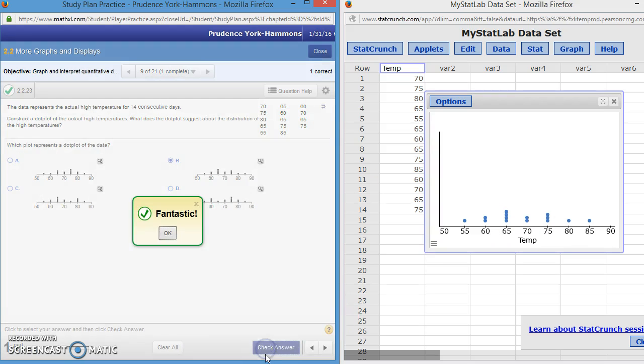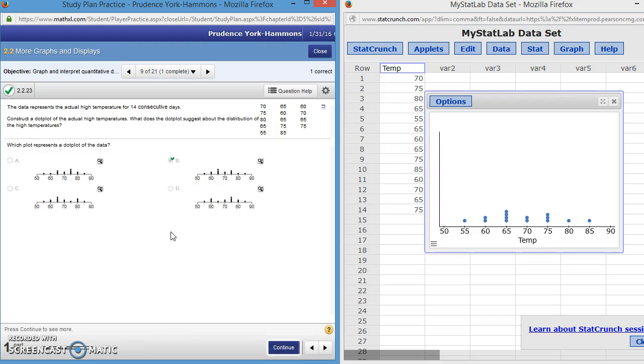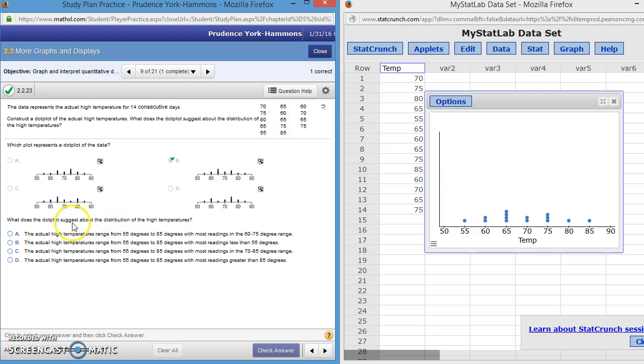Now, it asks us to analyze the data. What does the dot plot suggest about the distribution of the high temperatures? And you can see that we have several at 65. We have four of them. And we have several at 75. So let's look at our choices.